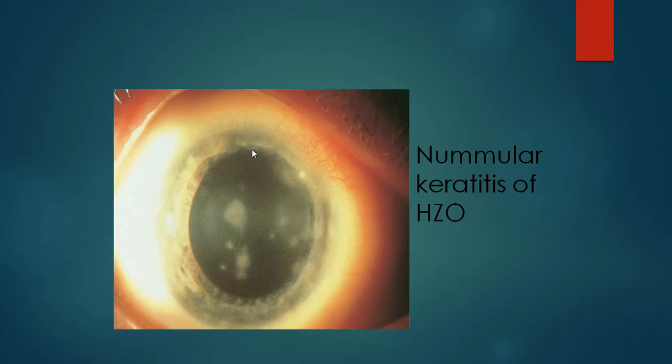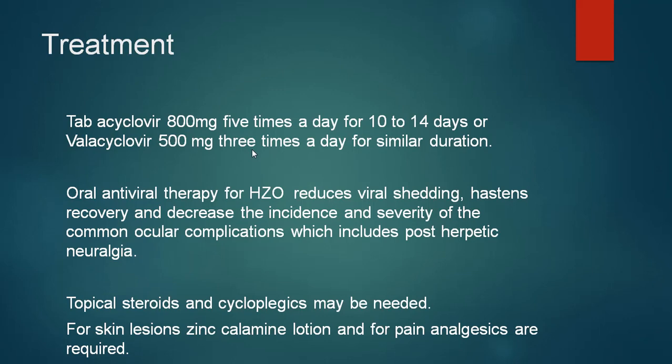This slide shows nummular keratitis with multiple lesions in the stroma of the cornea. The treatment of herpes zoster ophthalmicus is with acyclovir 800 mg five times a day for 10 to 14 days, or valacyclovir 500 mg three times a day for a similar duration. Oral antiviral therapy reduces viral shedding, hastens recovery, and decreases the incidence and severity of common ocular complications including post-herpetic neuralgia. Topicals such as zinc calamine lotion are needed for skin lesions, and analgesics are required for pain.